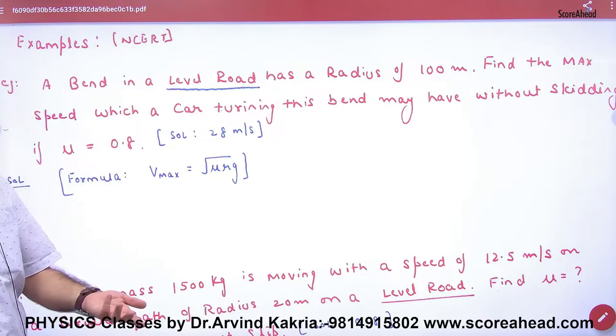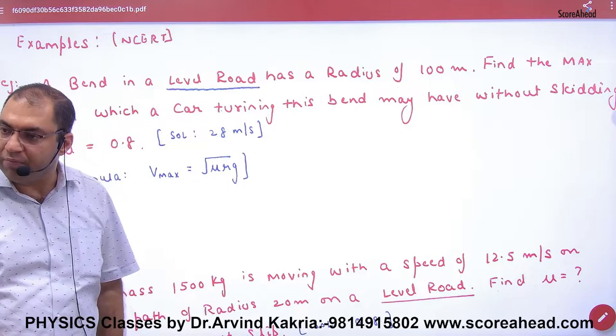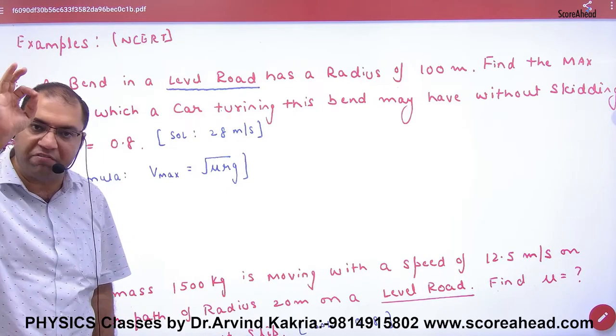Mu is given. Under root of mu rg, mu put, r put, g put. What point is clear? Which formula will we apply?